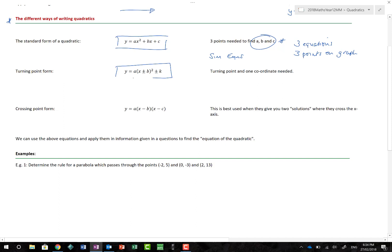There's turning point form, or completing the square form, where we might have something like y = 2(x - 3)² + 4. So if they give me the turning point, that's great. That means I can put this information straight in here. But to find my value of a, I'm still going to need one coordinate.